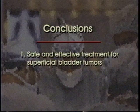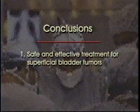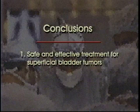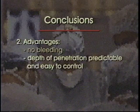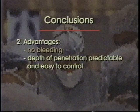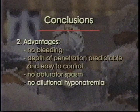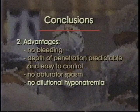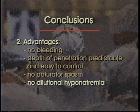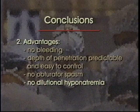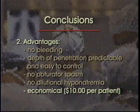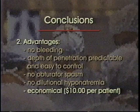In conclusion, the holmium laser is a safe and effective way to treat superficial bladder tumors. The advantages of the holmium laser over electrocautery are as follows: one, there is no bleeding; two, the depth of penetration is predictable and easy to control; three, there is no obturator spasm; four, since isotonic normal saline is used as the irrigating solution, there is no dilutional hyponatremia; five, it is very economical, with the cost of the fiber estimated at approximately $10 per patient.